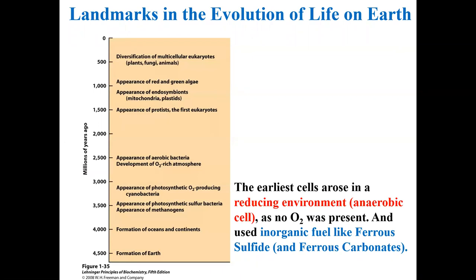Under anaerobic conditions, species could oxidize organic compounds to carbon dioxide by passing electrons not to molecular oxygen but to an acceptor like sulfate ion, thereby yielding hydrogen sulfide as a product. Then eventually oxygen-producing photosynthesis and cyanobacteria appeared on Earth, and the environment became slowly rich in oxygen. Aerobic bacteria appeared around two and a half billion years ago.